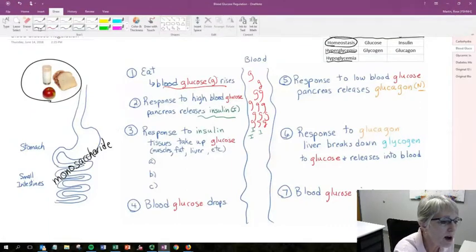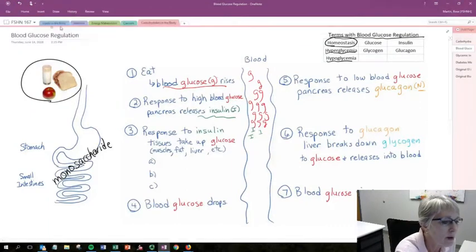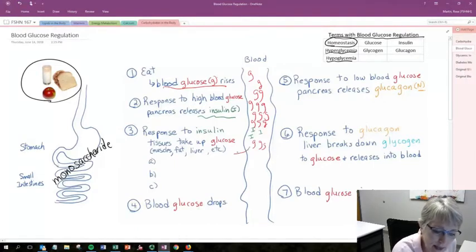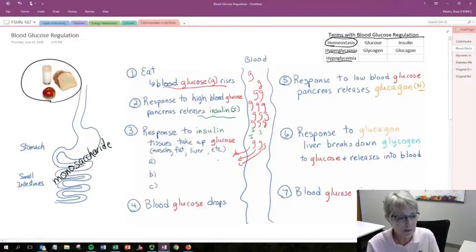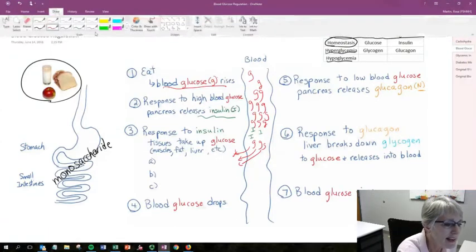Now, in response to that insulin, what will happen is the glucose is going to be pulled out of the blood into the tissues. So the tissues recognize that insulin, and in response to that, we're going to pull glucose out of the blood into the tissues. Now, what happens to that glucose?